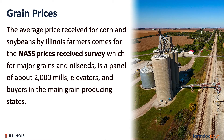The average price received for corn and soybeans by Illinois farmers comes from the NASS Prices Received Survey, which for major grains and oilseeds is a panel of about 2,000 mills, elevators, and buyers in the main grain-producing states. This survey is completed monthly asking the panel the total quantity purchased and total dollars received. The yearly number is the marketing year value for that crop year.